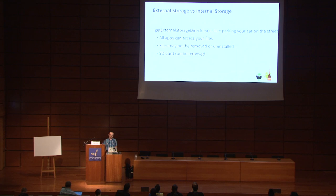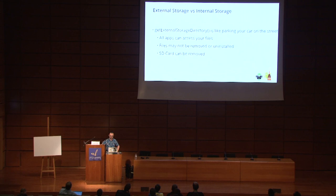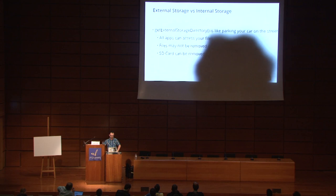First, external storage versus internal storage. Traditionally, when working with Android, we need to store information on the device — personal information, security tokens to communicate with the server, passwords, et cetera. I like this analogy: when we are storing things externally, traditionally on an SD card, calling the function get external storage directory is like parking a car on the street. All apps can access your files. There is no limitation. Files may not be removed on uninstall, and the SD card can be removed or stolen.